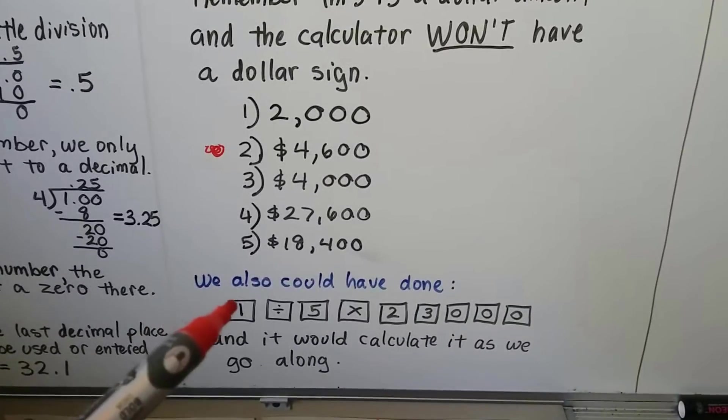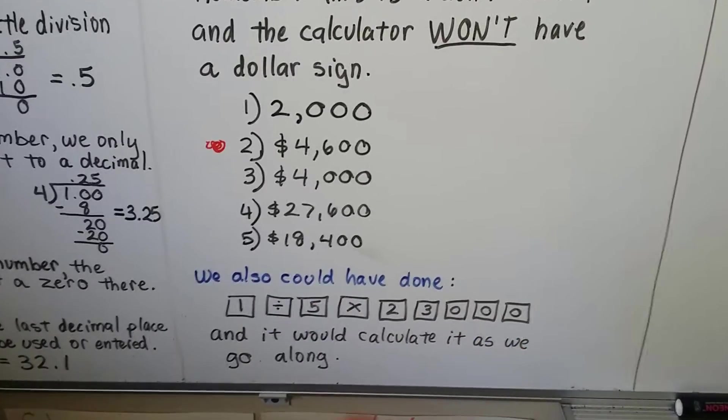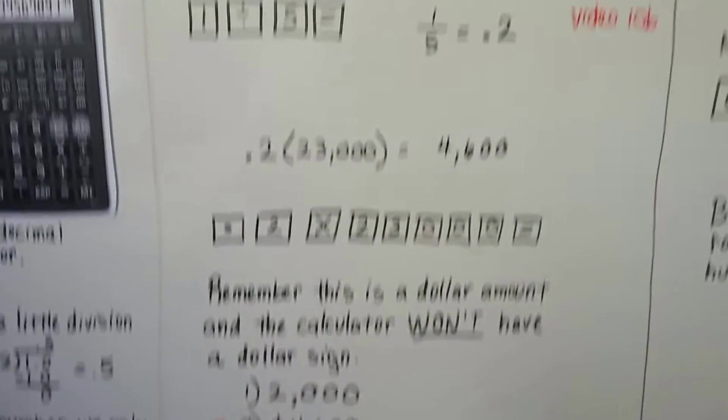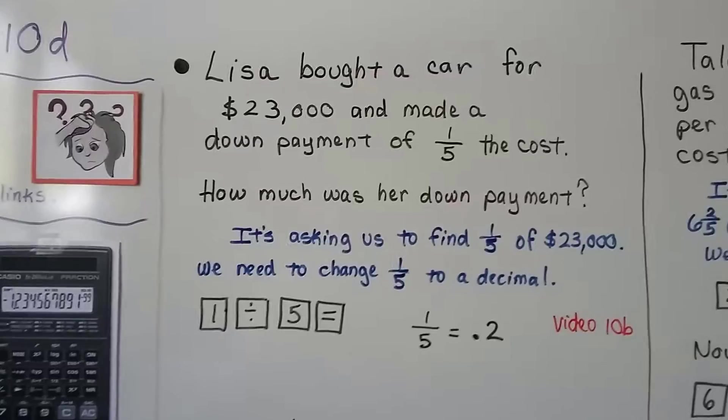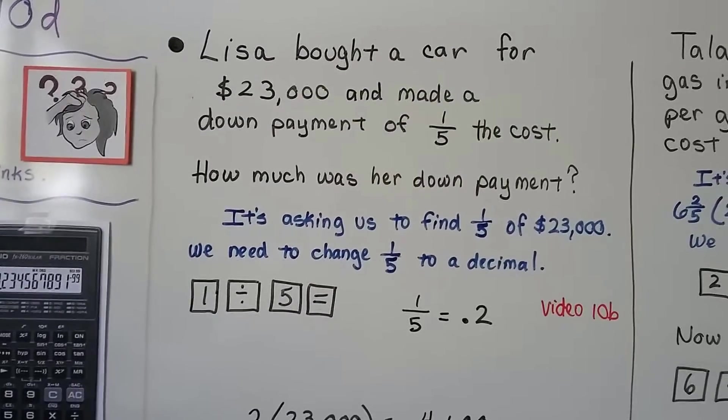We also could have done 1 divided by 5 times 23,000 and it would calculate it as we go along. And that can be done because we're only dealing with a fraction 1 fifth. Now, if it was a mixed number, we wouldn't be able to do that. We'd have to do it in two parts.